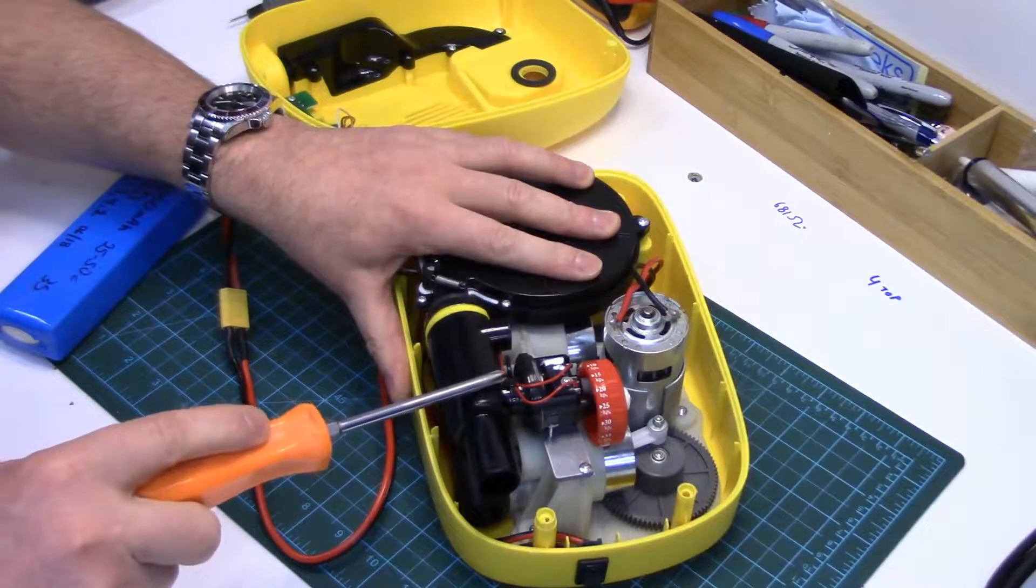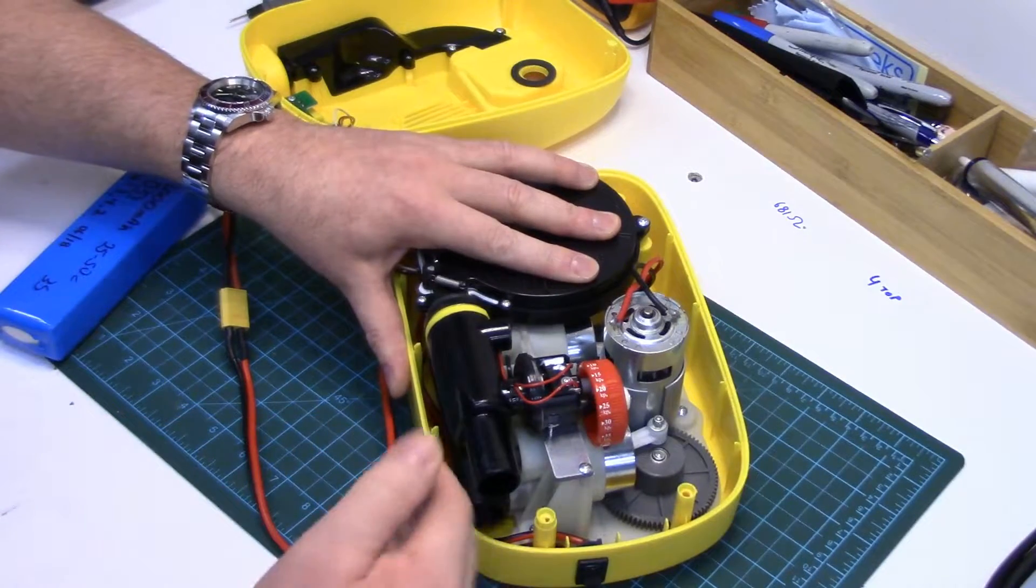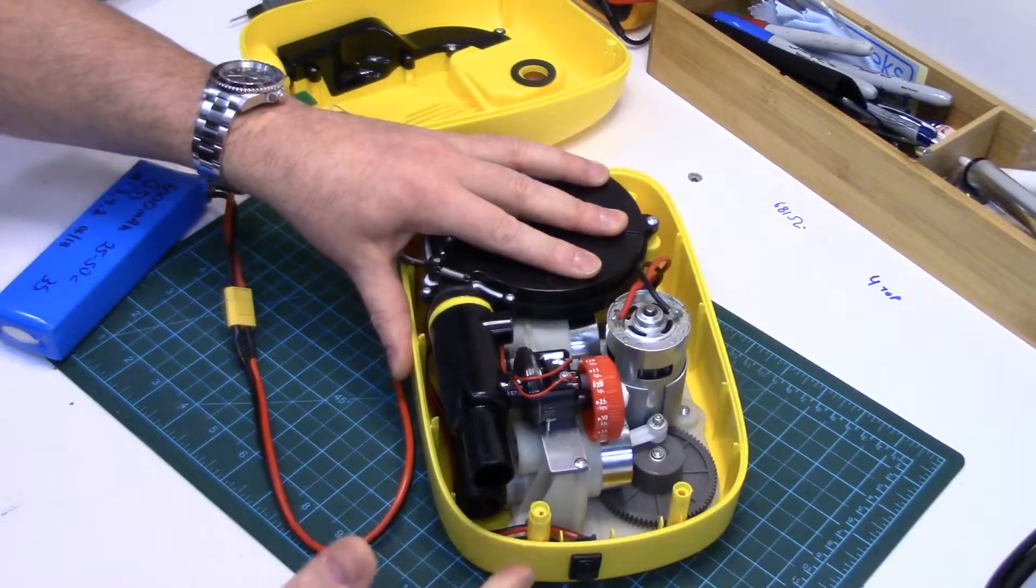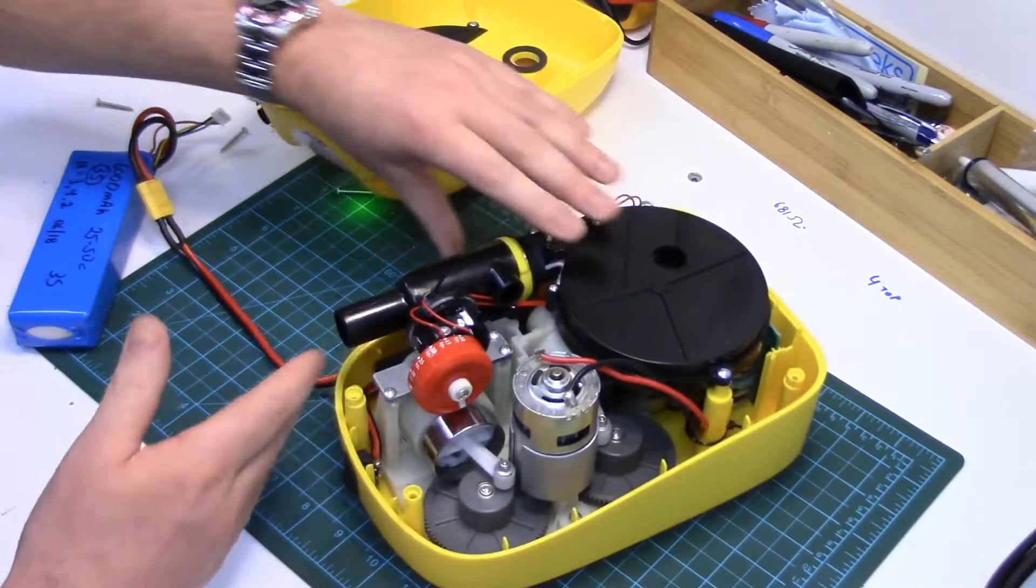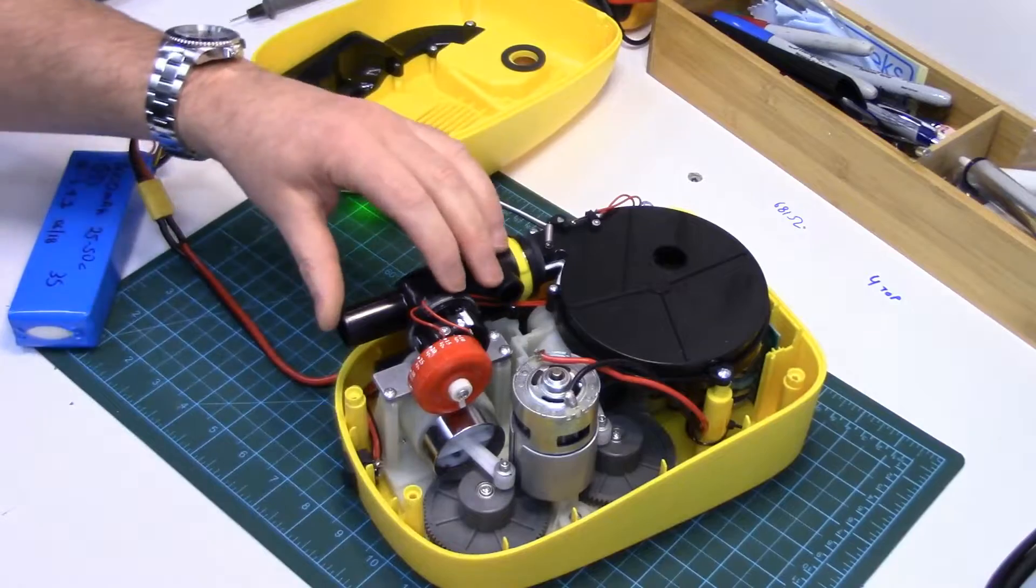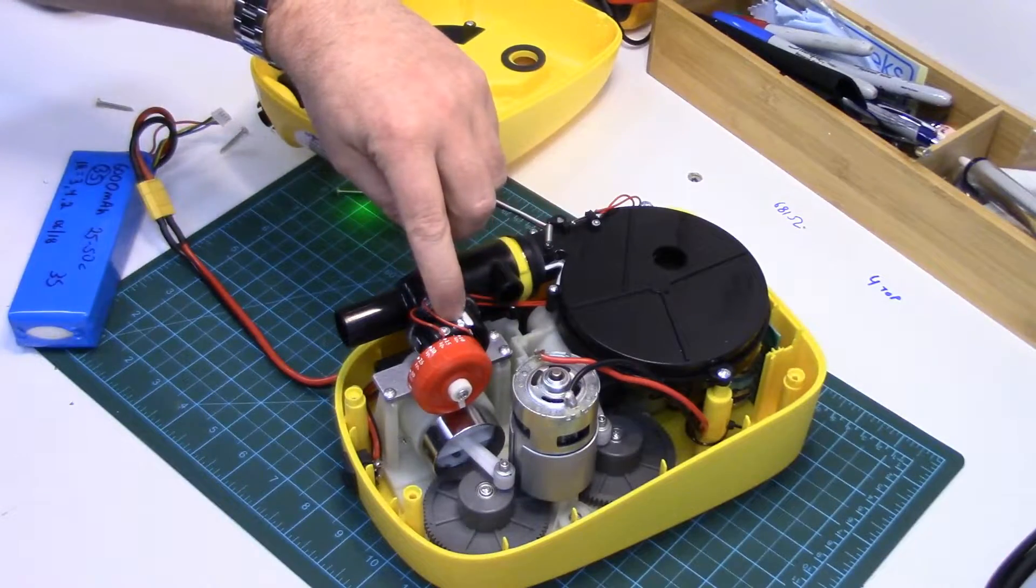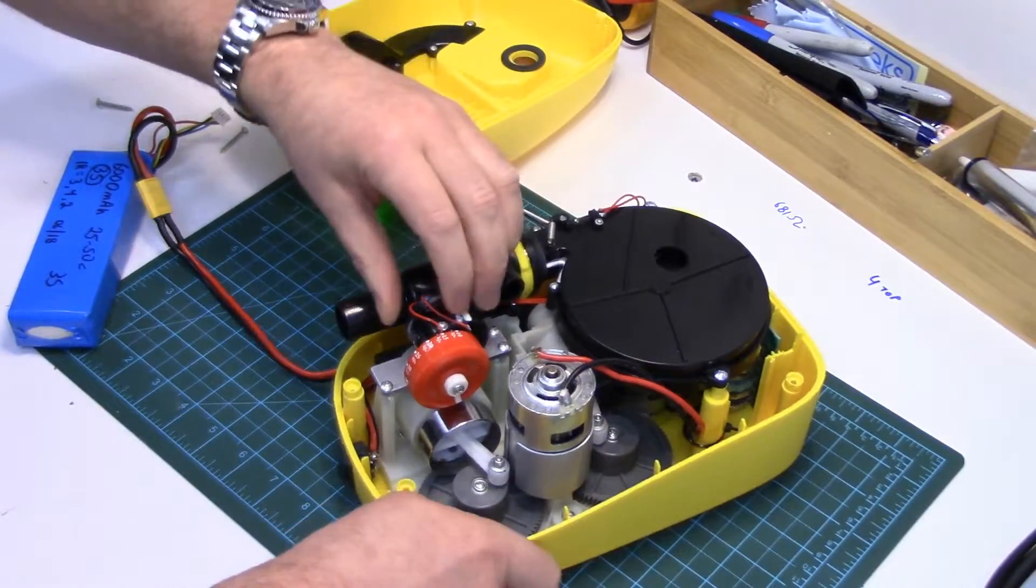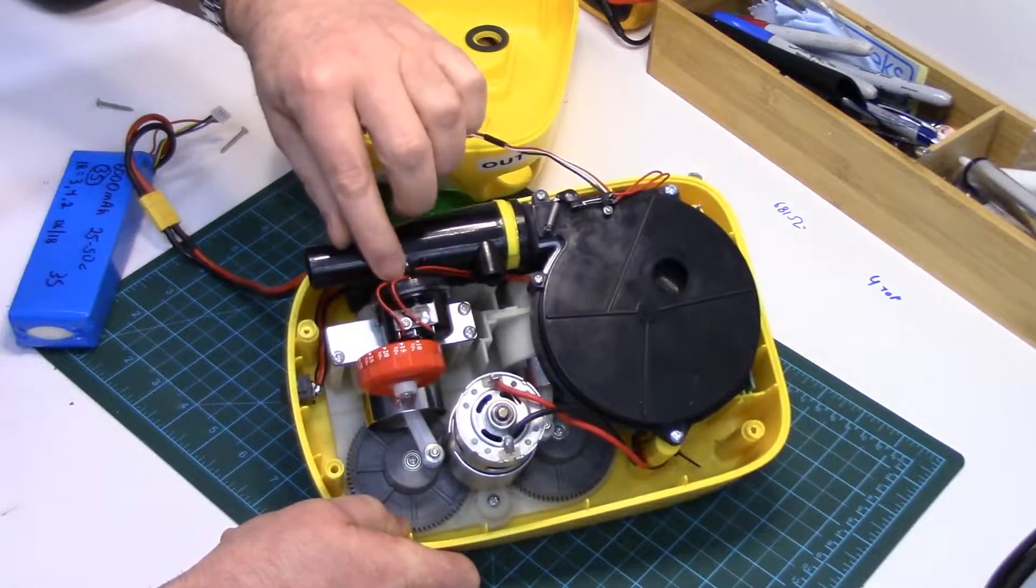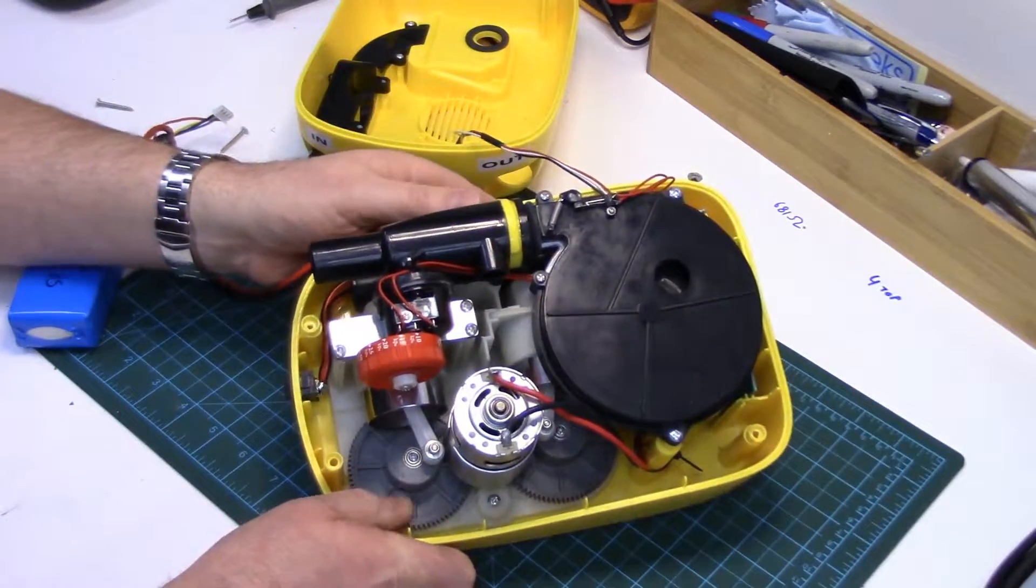And then up here, there's a little diaphragm, which is also detecting the back pressure. So as the pressure builds and builds and builds, this diaphragm will move until it hits this little micro switch in here. It's pushing out against the micro switch. And then that's what tells it to turn off.